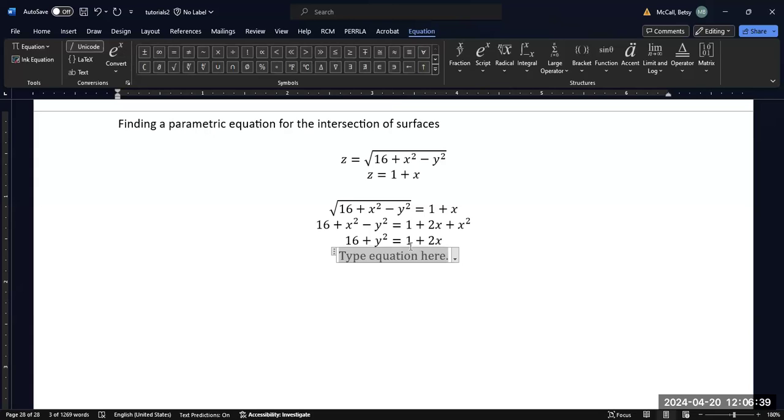If I solve for 2x, I move the 1 over to the other side, I'm going to get 15 minus y squared. And then I'm going to divide everything by 2, I'm going to get x equals 15 over 2 minus 1 half y squared.